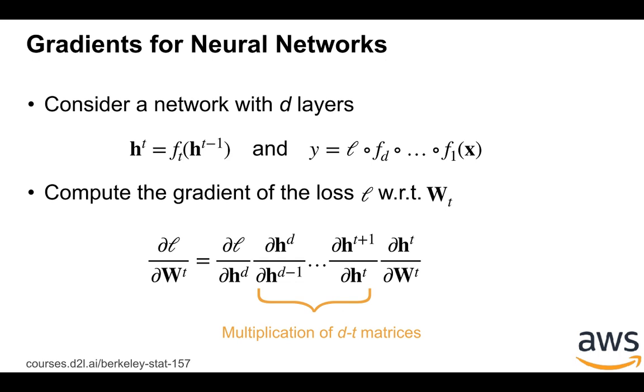The input of the t-th layer is called h^(t-1), and the output is h^t. This layer has a function called f_t that transfers the input h^(t-1) into output h^t. Given input x to the network, the final output y is we first put x into the first layer f_1 until the last layer f_d, and then fit into loss function ℓ. The thing we want to consider is computing the gradients of the loss ℓ with respect to W^t, where W^t is the parameter of the t-th layer.